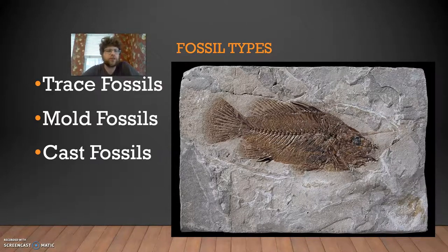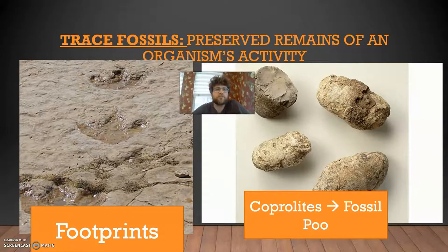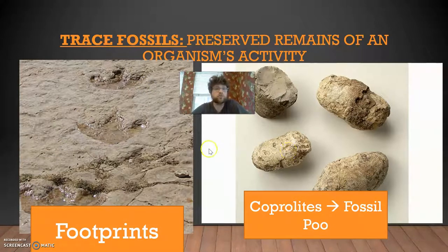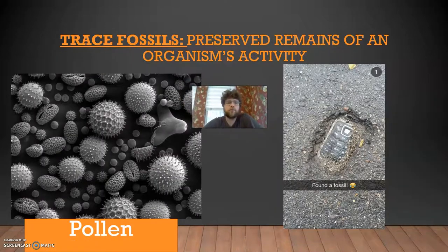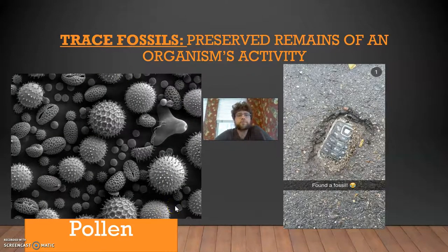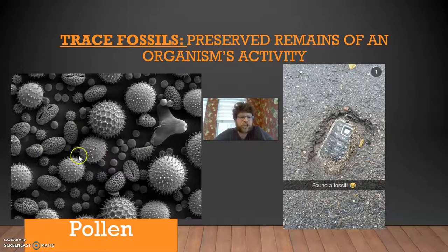There are three fossil types we'll look at: trace fossils, mold fossils, and cast fossils. Trace fossils are the remains of an organism's activity — footprints are one example. You can also have coprolites, which is fossil poo. Pollen is another neat one, because pollen gives us an idea of what a prehistoric forest looked like — we can analyze it and see that there were ancient pines, ginkgos, and ferns, giving us a picture of that environment.